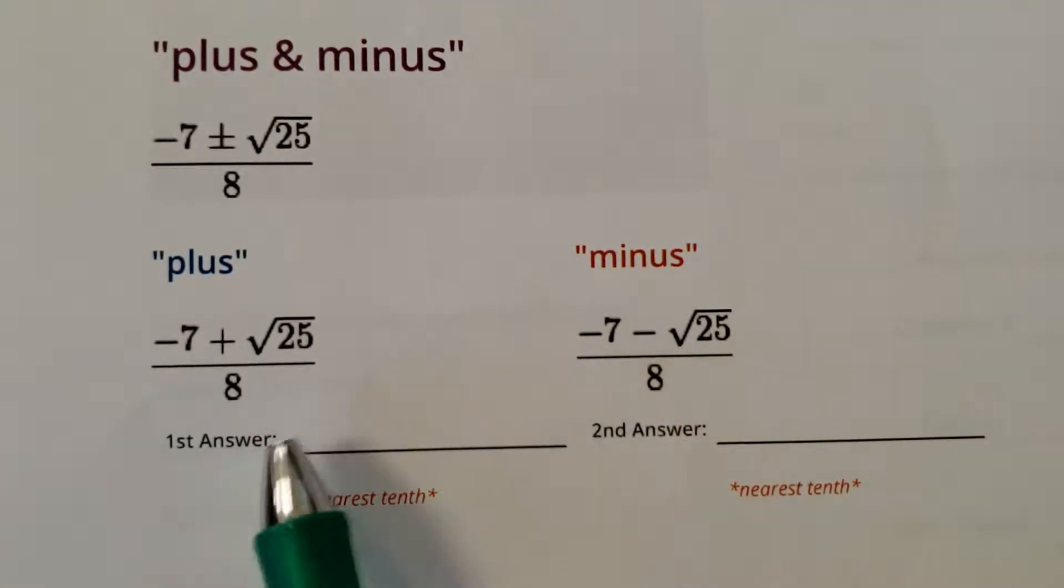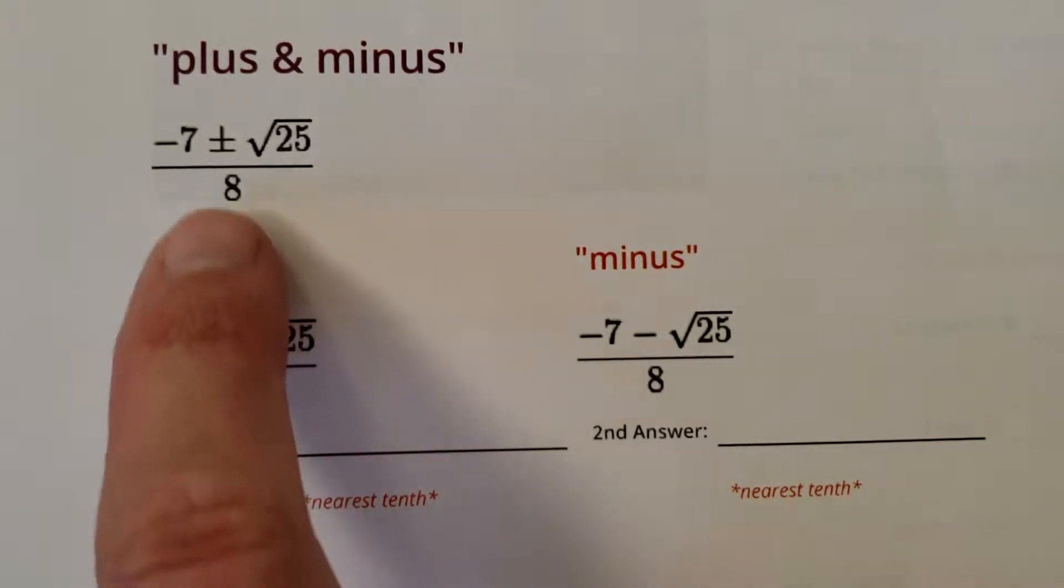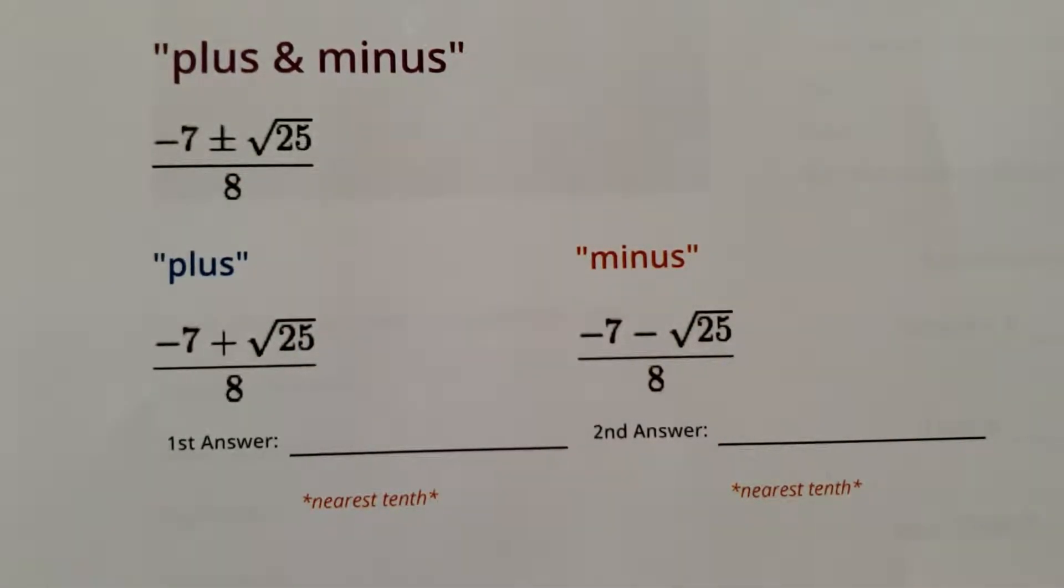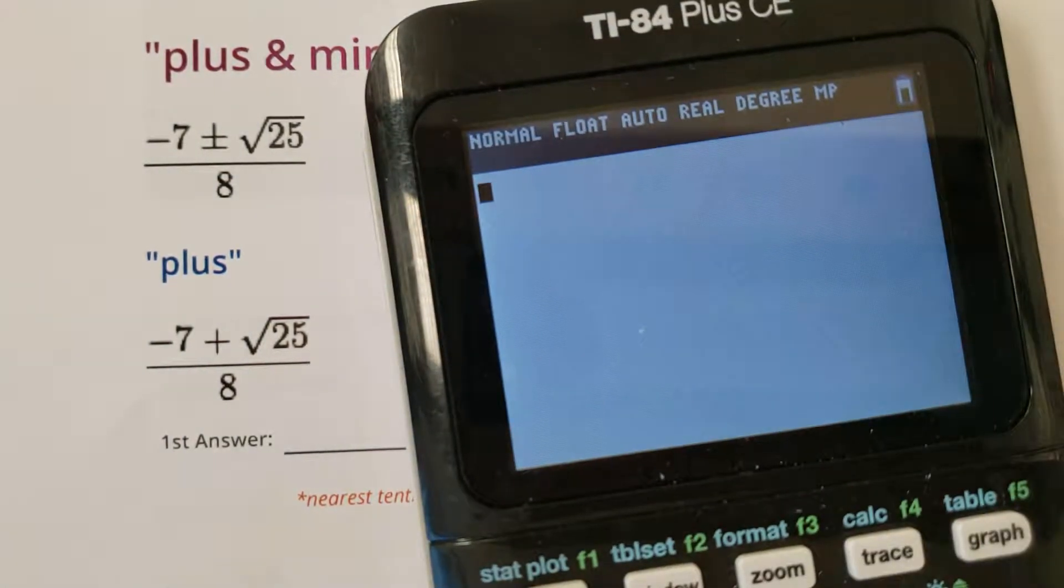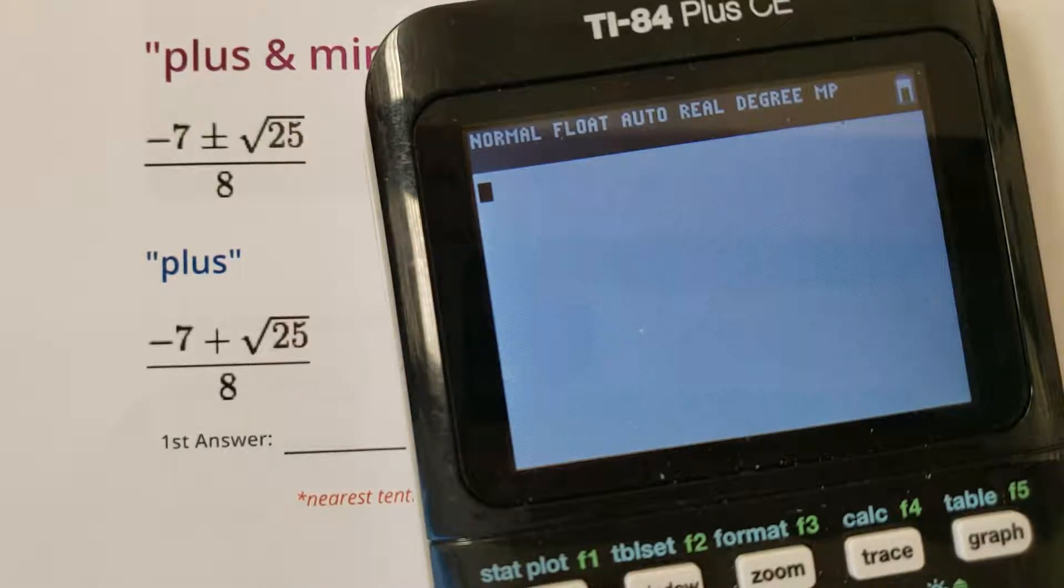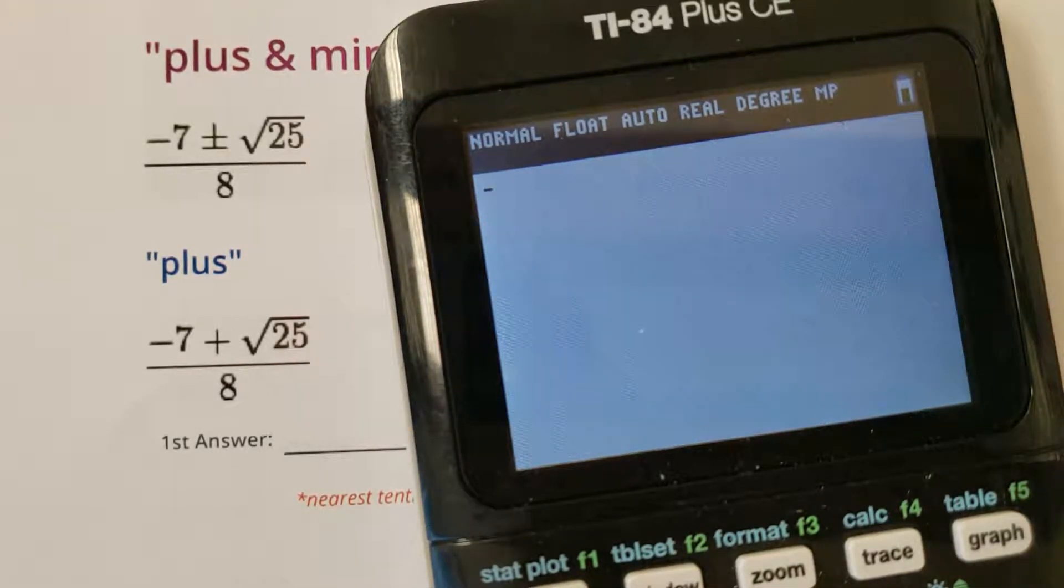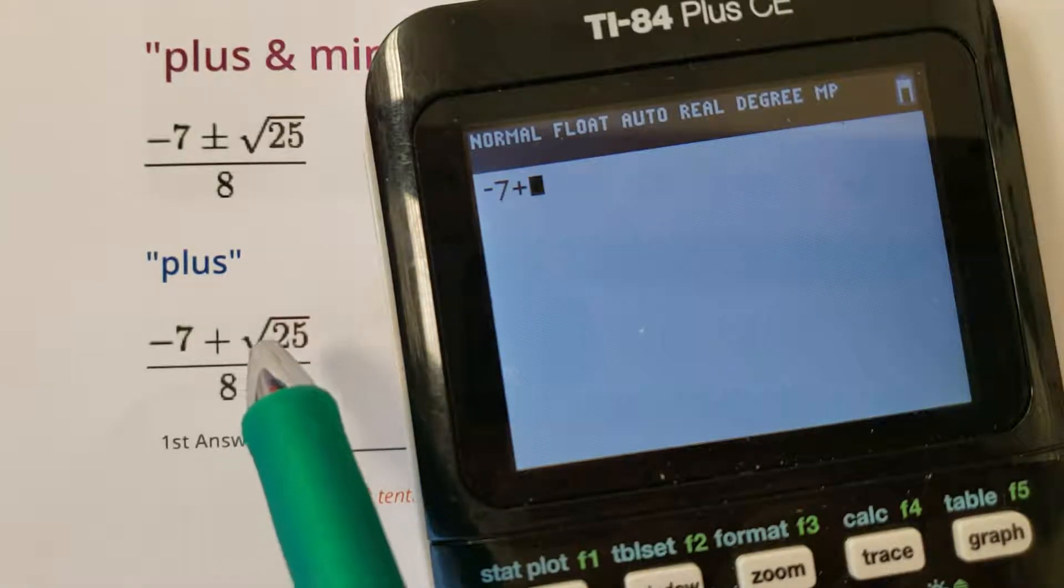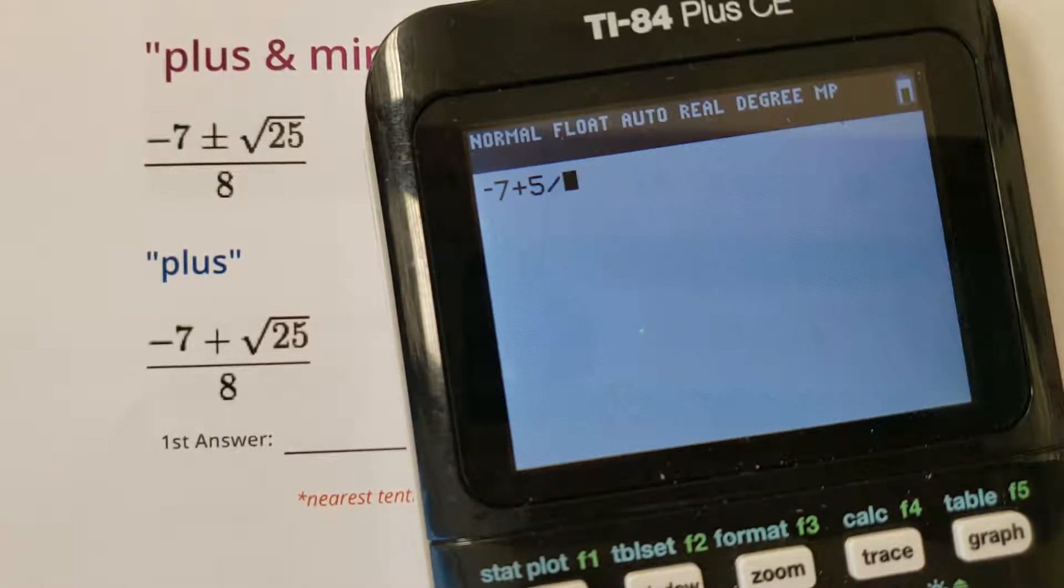So we have to calculate both of these separately. There is no button that does this both at once. Sorry, your calculator is an amazing thing, but it can't do everything at once. Now if you're a super smart person, and you go like this, oh I can go negative 7 plus, oh I know what that is, the square root of 25 is 5. I can just go like this.